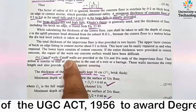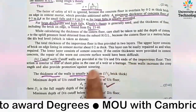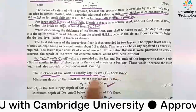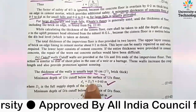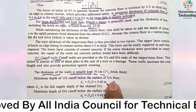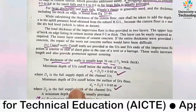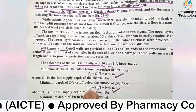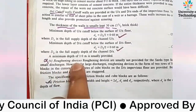The fourth point is cutoff walls. Cutoff walls are provided at the upstream and downstream ends of the impervious floor. The thickness of the cutoff wall is usually 30 centimeters, that is, one-and-a-half brick thickness. The minimum depth of the upstream cutoff wall is: D1 equals capital D1 divided by 3 plus 0.6 meters. For the downstream cutoff wall, the minimum depth is: D2 equals capital D2 plus 0.60 meters.